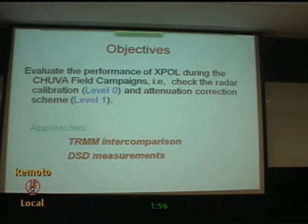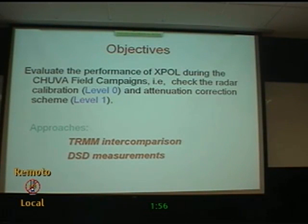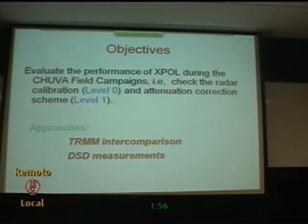The objectives of this presentation are very short — I'll show you several plots with some numbers we've pulled out. These are not the final numbers because we still have to do some filtering to improve things. The idea is to check the calibration at level zero, which is the weather reflectivity factor as measured, and then the attenuation correction scheme at level one, which is based on PDP. That's the algorithm we use to estimate rainfall rates, so anything you say about rain depends on these calibrations and correction schemes.